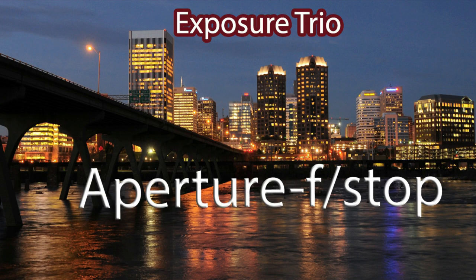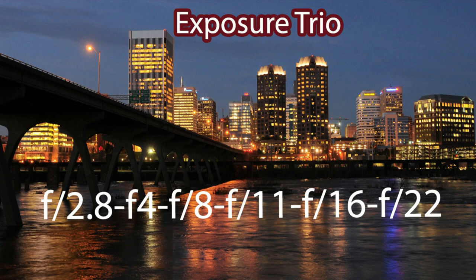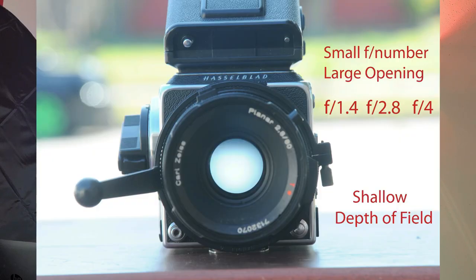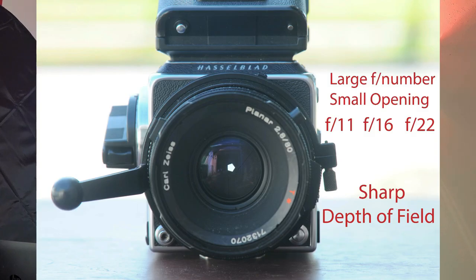Moving on to the second member of the trio: the aperture, also known as the F-stop. The aperture or F-stop can come in a wide range of numbers, from 1.4, 2.8, F4, 5.6, 8, 11, 16, and so on — depending on the lens, it could be higher or lower. So the smaller the F-number, like 1.4 or 2.8, is a larger opening and lets in more light. And on the other end of the scale, the larger F-number is a smaller opening and lets in the least amount of light.